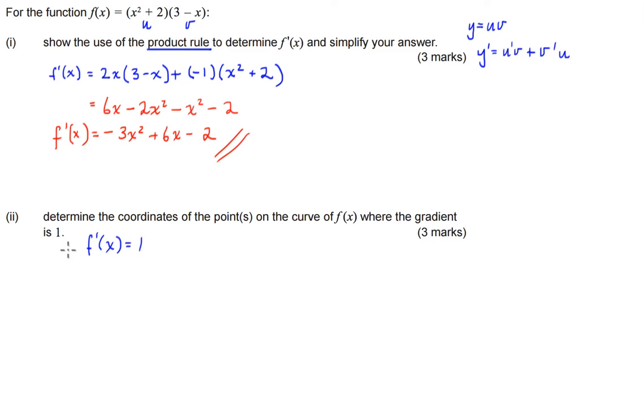So what we're going to do is we're going to write down our f dash of x, we have negative 3x squared plus 6x minus 2 equals 1. I'm not a huge fan of these negative coefficients out the front of our highest power term, so what I'm going to do is get all of the terms and move them over that side.